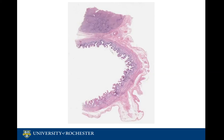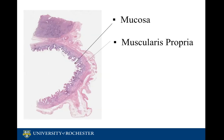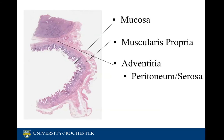It is composed of three parts including the fundus, the body, and the neck. The gallbladder is comprised of many distinct layers including the mucosa, muscularis propria, and the adventitia, sometimes with peritoneum or serosal coverage.